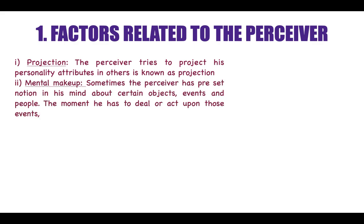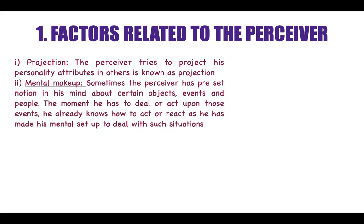Another factor related to the perceiver is the mental makeup. Sometimes the perceiver will have some preset notion in his mind about certain objects, certain events and certain people. The moment he has to deal with these events, he already knows how to act or react, as he has his own mental setup. He has already dealt with certain objects, events and people and will deal with those people accordingly.